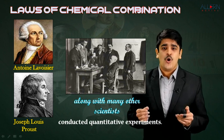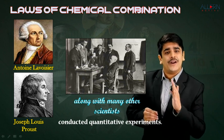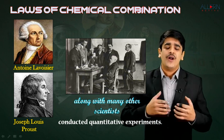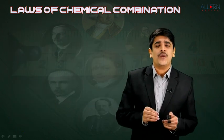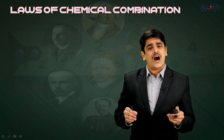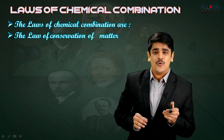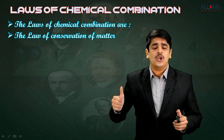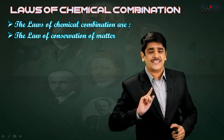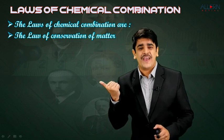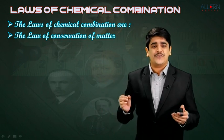One must understand that these were all quantitative experiments where all numbers are involved. The laws of chemical combination are as follows. The first law is the law of conservation of matter, something we have discussed in the first module. Now it is time to discuss the second law.